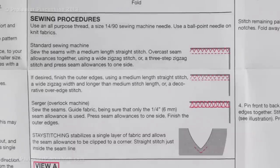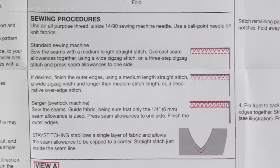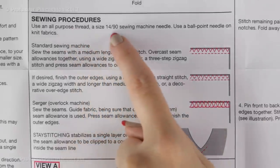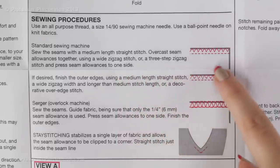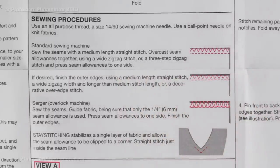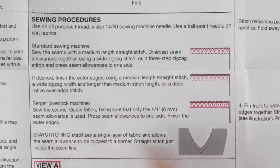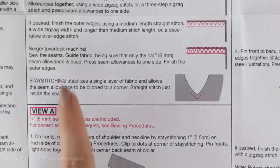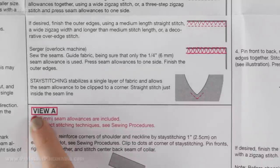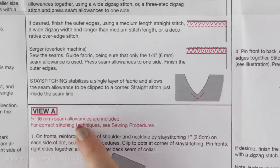Here is another example of a sewing information box, this time for a quick sew pattern. They call it sewing procedures but it serves the same purpose. I really like the quick sew patterns because they give you extra tips and tricks, such as what type of sewing machine needle to use and what type of stitches would be helpful. They also have some glossary terms. You will notice they don't right away state the seam allowance — sometimes with quick sew patterns they put it at the very beginning of the directions. In this particular case they are saying for view A you are going to do a quarter inch seam allowance.